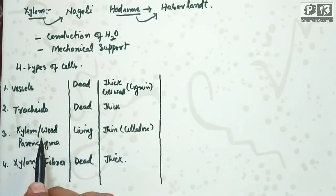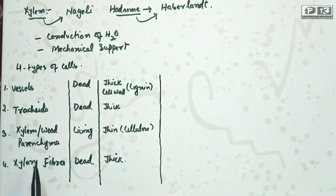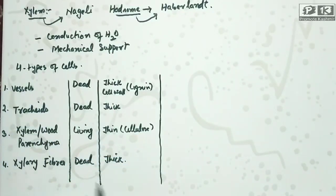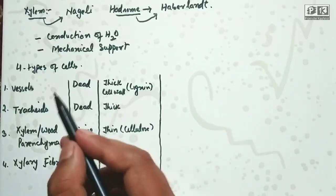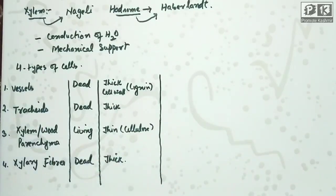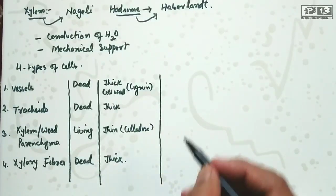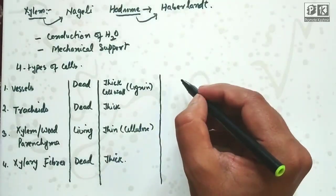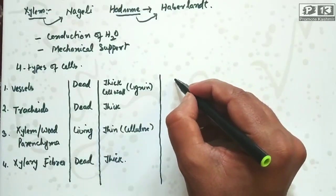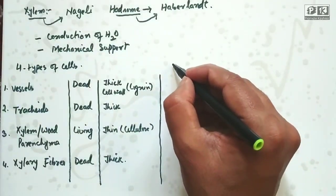In angiosperms: vessel is present, tracheid is present, xylem parenchyma is present, and xylem fibers are present — all four types are found in angiosperms.